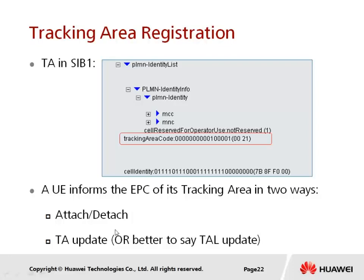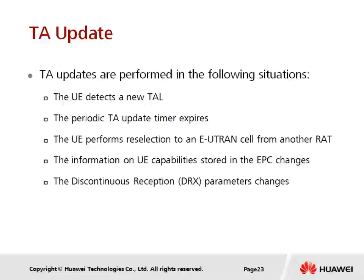The user will be informed of the TA list via two main methods: number one, the user will be informed of the TA list when performing the attach procedure; second, when the user is performing a tracking area update. For each tracking area update, the user will be informed of the new tracking area list. The user performs a TA update when it detects a new TAC broadcasted in SIB1 that does not match the TA list sent by the MME, or when the TA update timer has expired.